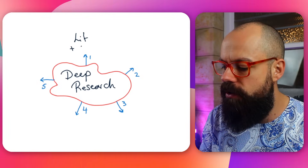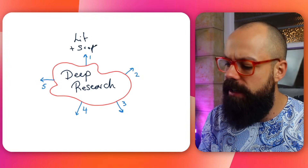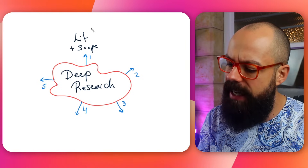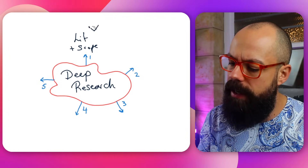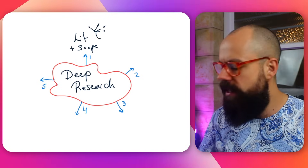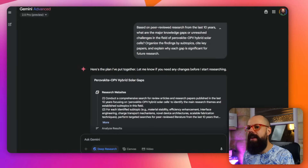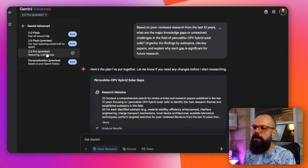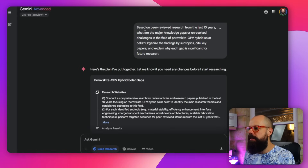With literature and scoping, you can get a map of what research is out there and what is going on in the research field. Here I am on Gemini Advanced 2.5 preview mode, which is the most powerful thing I have tried so far in the large language model world. And you can see the prompt I put in here for scoping out a new research field.